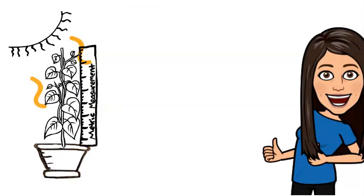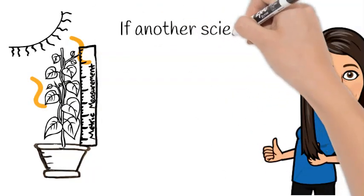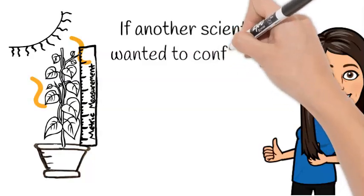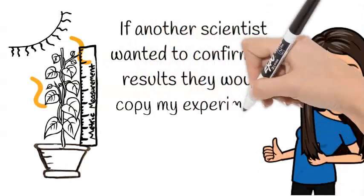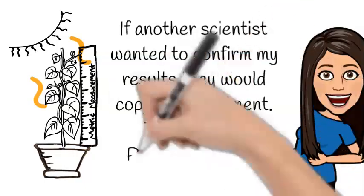Yay! Now I can share that pea plants grow more successfully in natural sunlight. If another scientist ever wanted to confirm my results, they would copy my experimental procedures and repeat the experiment on their own. This is called replication.